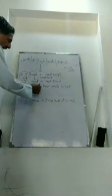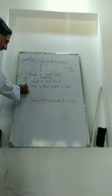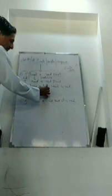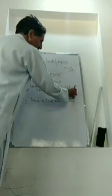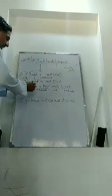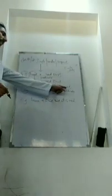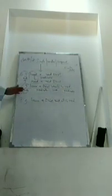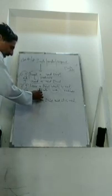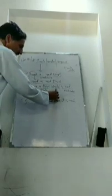Now the second example: 'I have a shirt which is red.' Here 'I' is the subject and 'have a shirt' is the predicate. 'Which' is subject and 'is red' is the predicate. How many subjects, dear students, are in this sentence? Two — 'I' and 'which.' Now changing into past: 'I had a shirt which was red.'